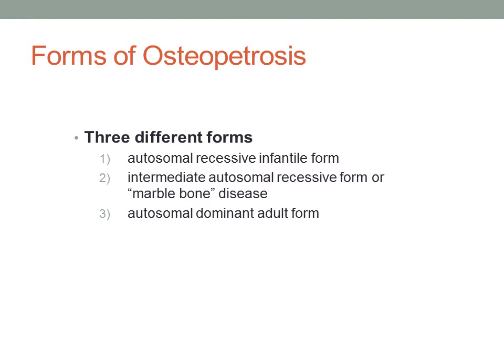This disease has three different forms which affect its severity. These forms are an autosomal recessive infantile form, an intermediate autosomal recessive form, or marble bone disease, and an autosomal dominant adult form.